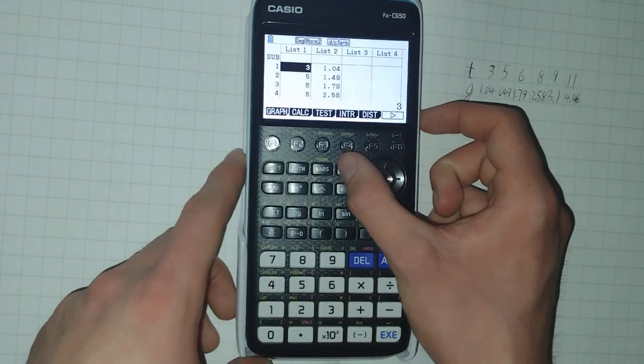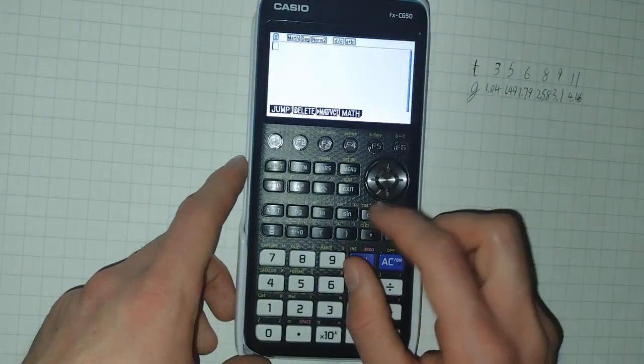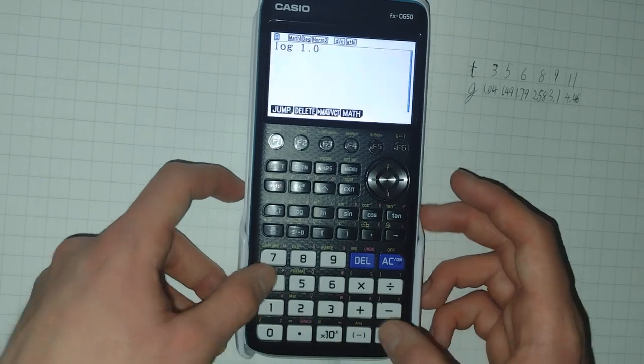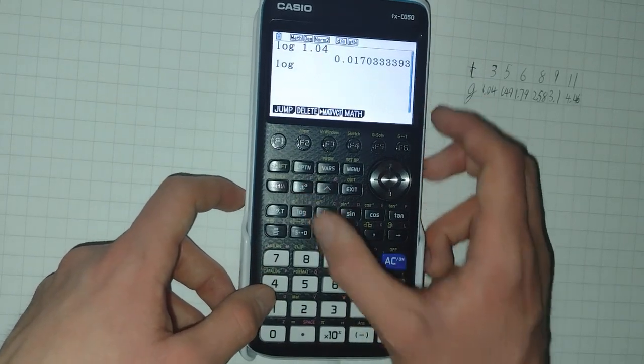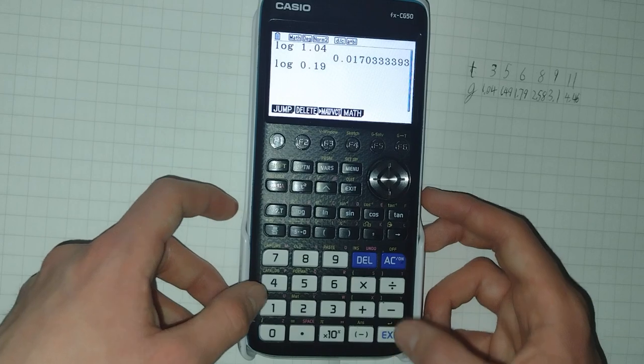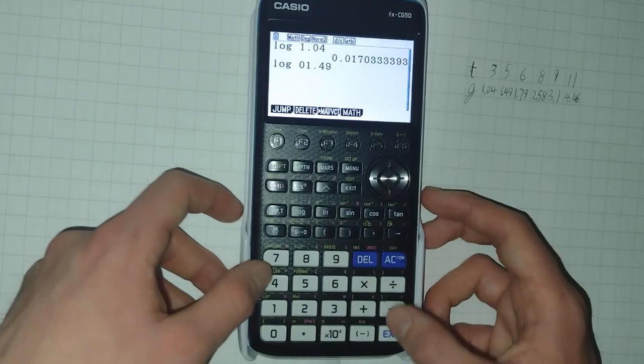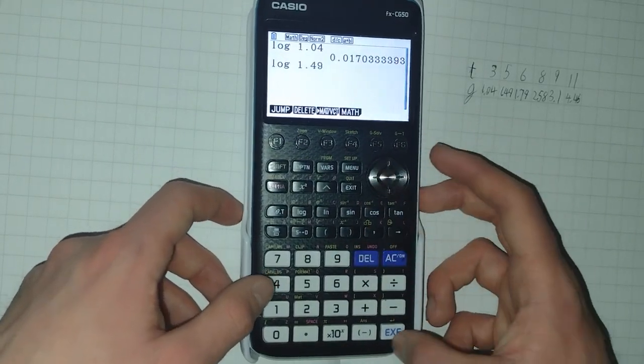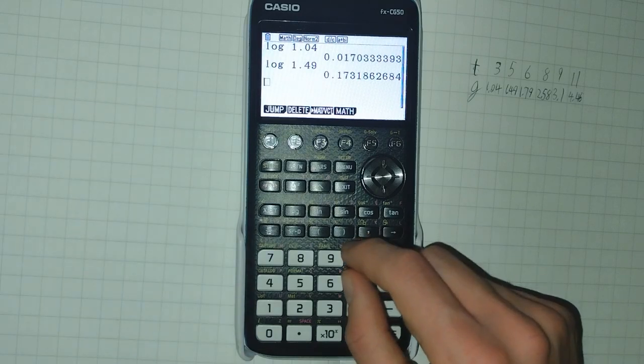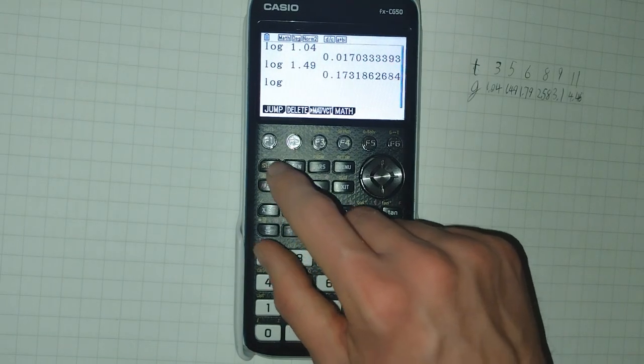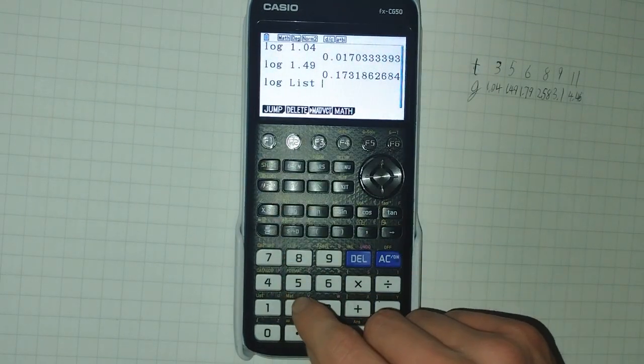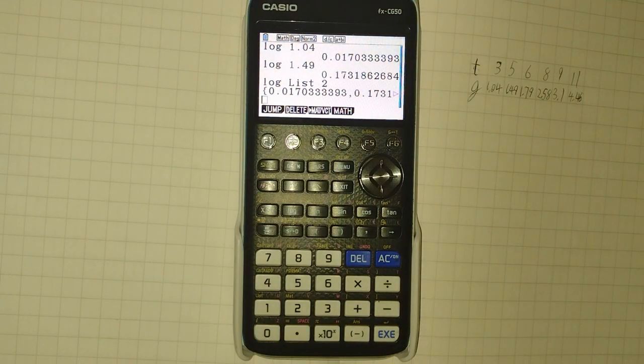So of course, I could just go into run matrix and do log 1.04 and log 1.49 and so on. But there's a faster way. I can actually do log shift list two. And that will log the entire list for me.